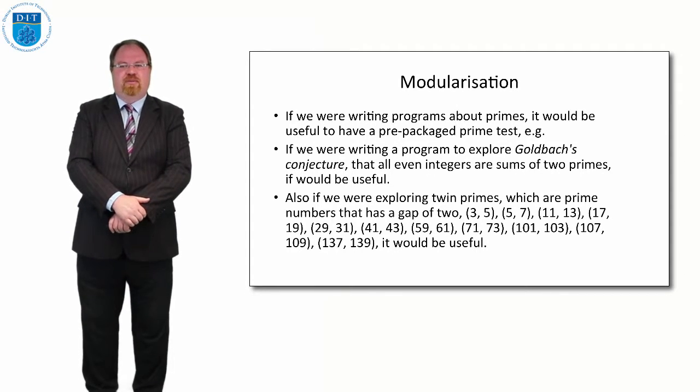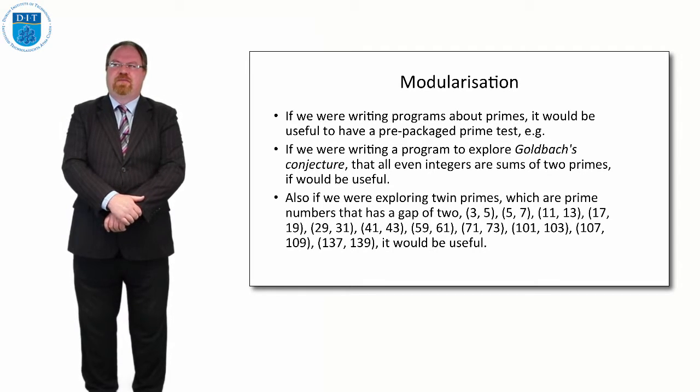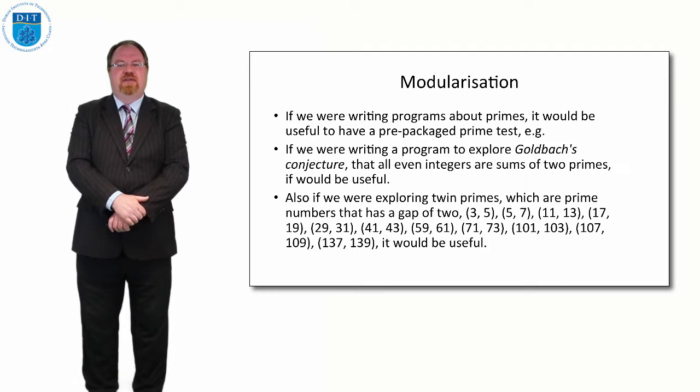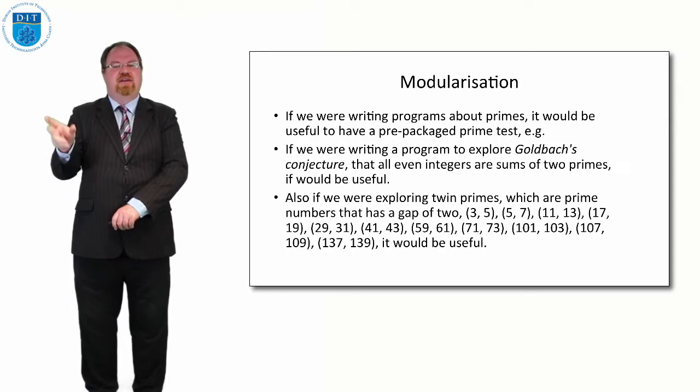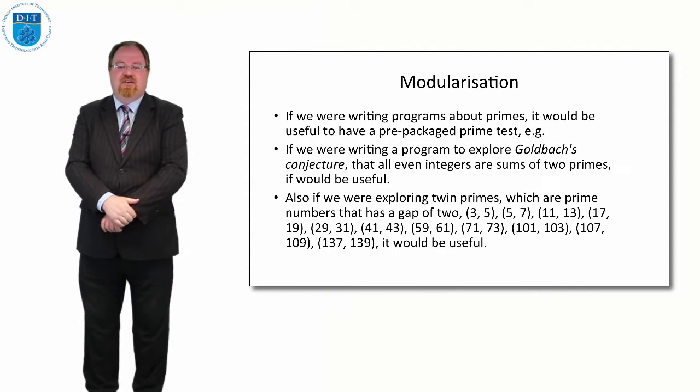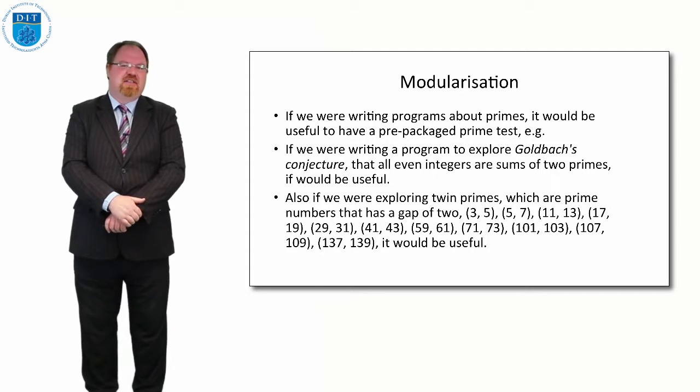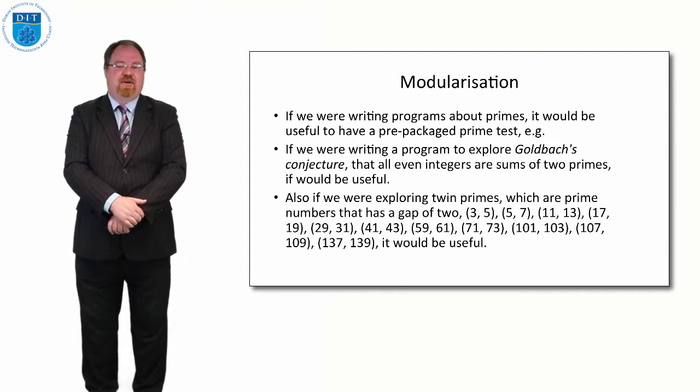So every even number can be calculated as the sum of two primes. So if I have my prime checker, that would be part of the code to check Goldbach's conjecture. But I wouldn't want to be printing out is prime or is not prime every time. So I'm just checking if it's prime or not.